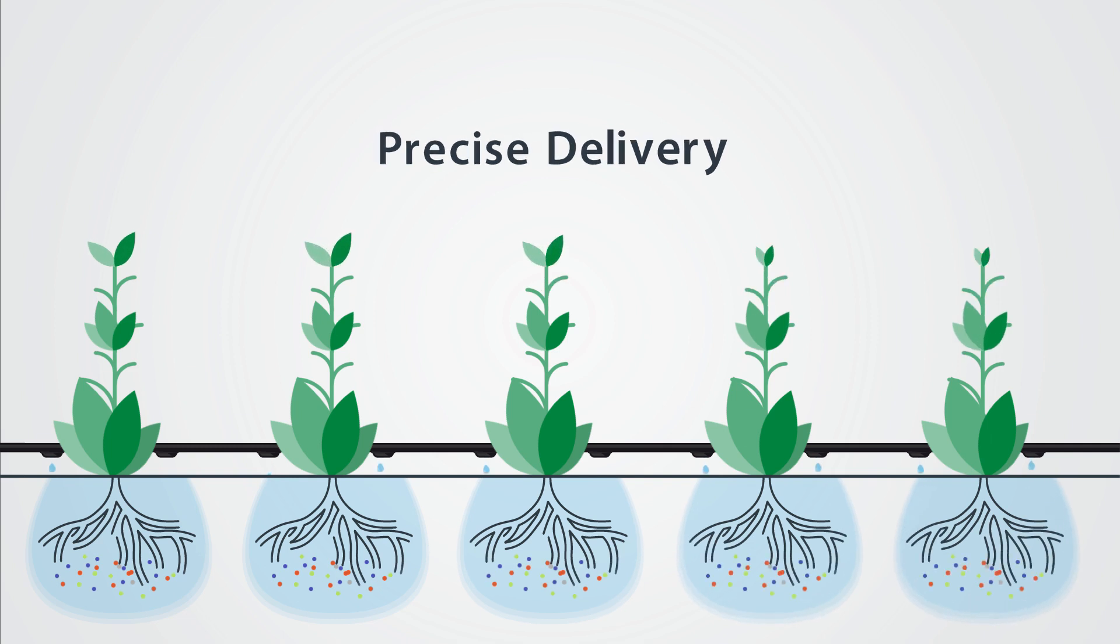Applied through irrigation, fertigation delivers soluble nutrition precisely where it's needed, direct to the root zone.